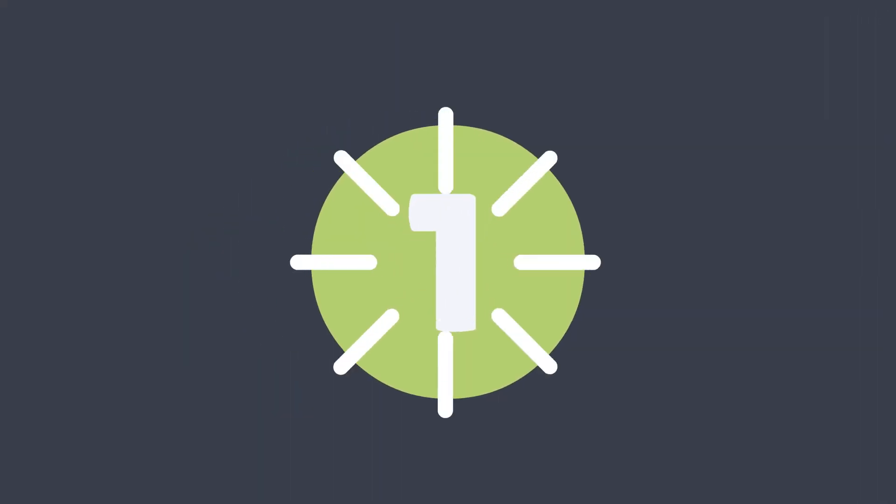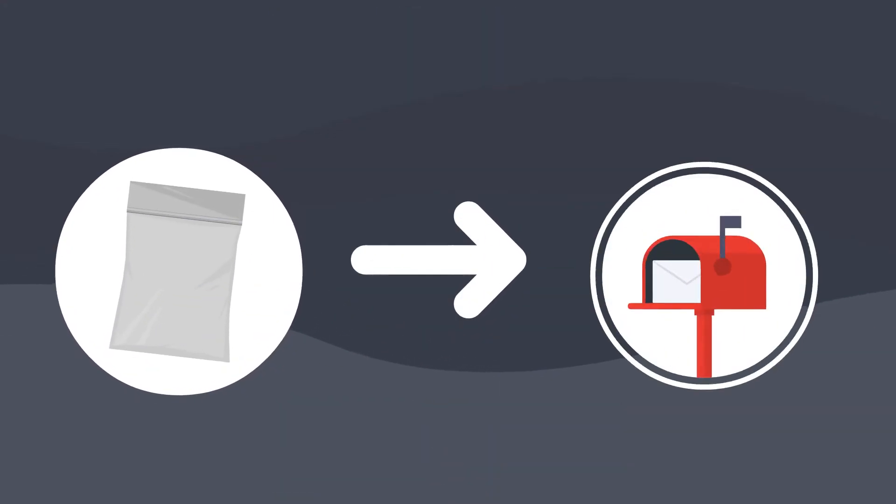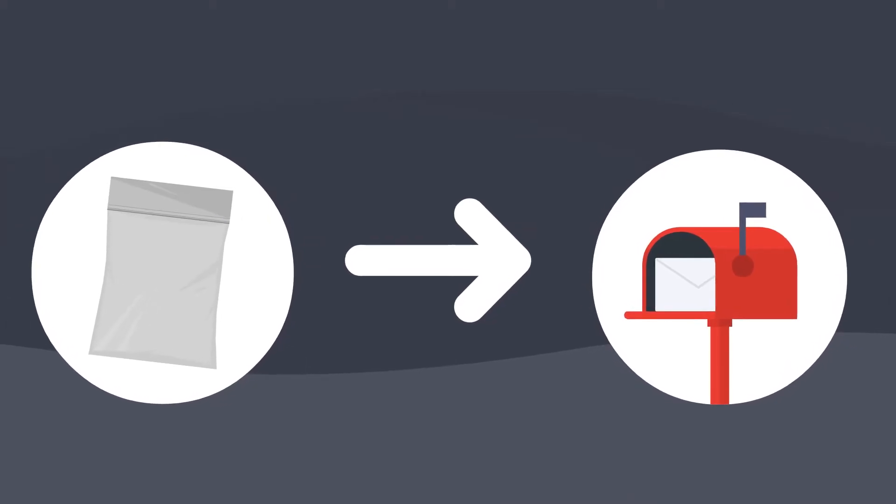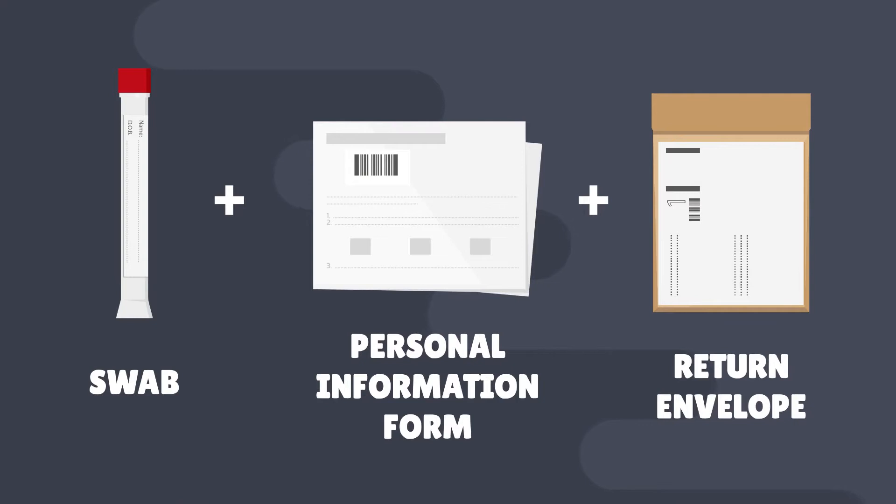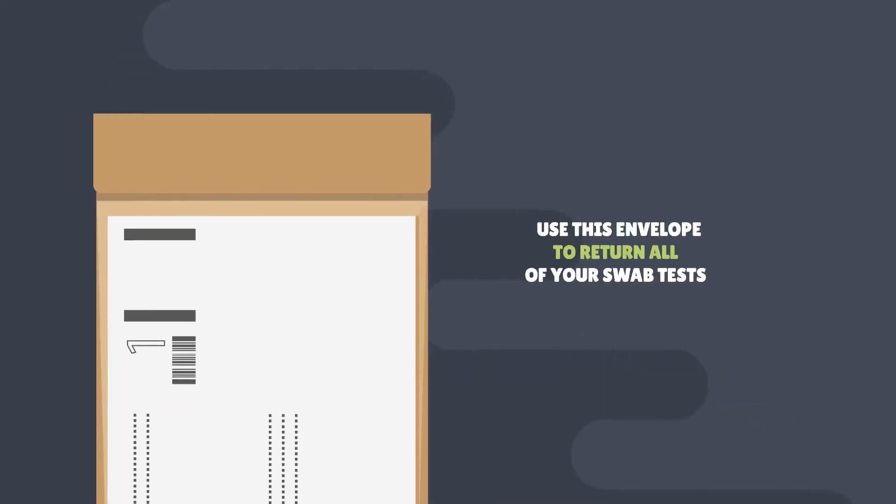Step 1. When you get your test kit in the post, open it. The swab, personal information form and return envelope will be inside. You should use this envelope to return all of your swab tests. Start by taking the sealed swab from the package.